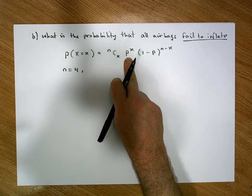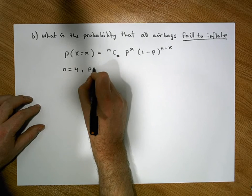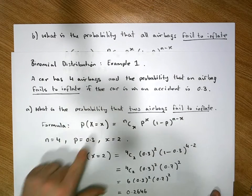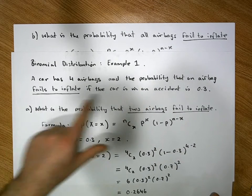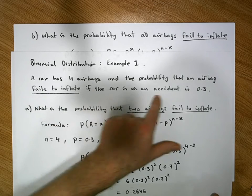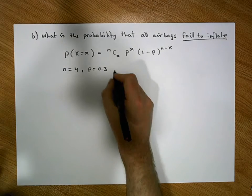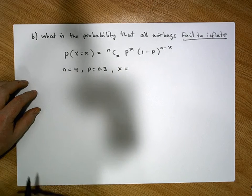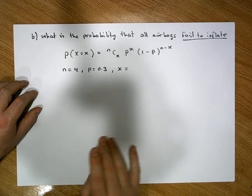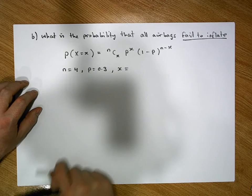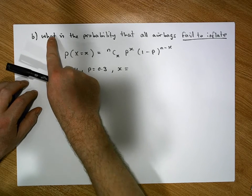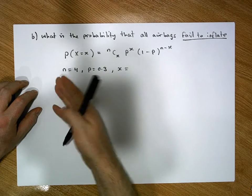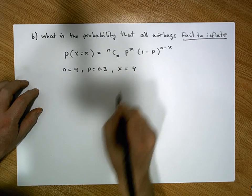P is equal to 0.3 — that's from our scenario. The probability that an airbag fails to inflate is 0.3. We need to know x: out of the four objects, the context of the experiment is all about failing to inflate. The probability we want to calculate is what is the probability that all airbags fail to inflate — all four of them — so x is equal to four.